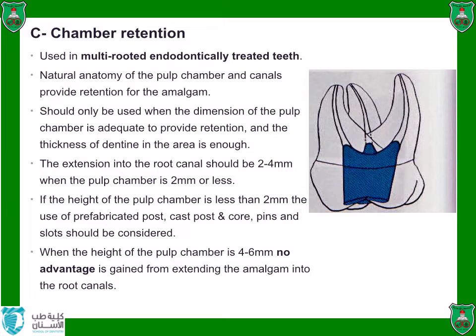A depth of 4 to 6 mm is enough to hold the amalgam. If the pulp chamber is between 2 to 4 mm, you might need to enter slightly into the canals, remove some gutta-percha, and condense amalgam there to increase retention. If the pulp chamber is less than 2 mm, it is better to use posts — either prefabricated posts or cast posts and core — to retain the amalgam.